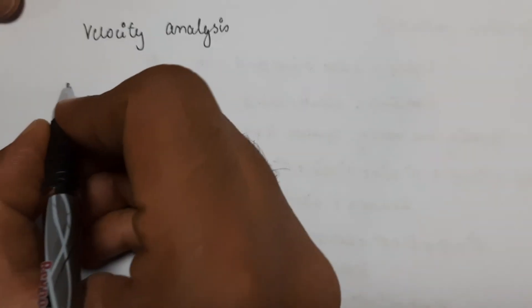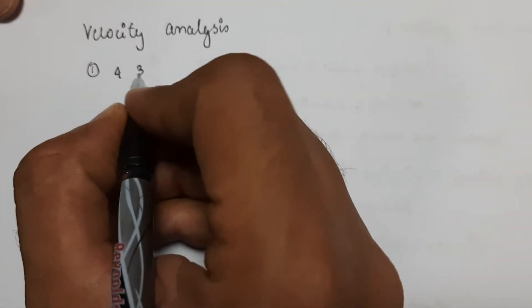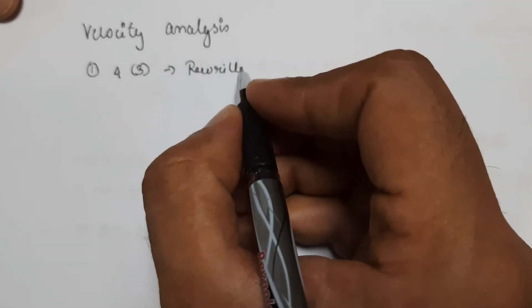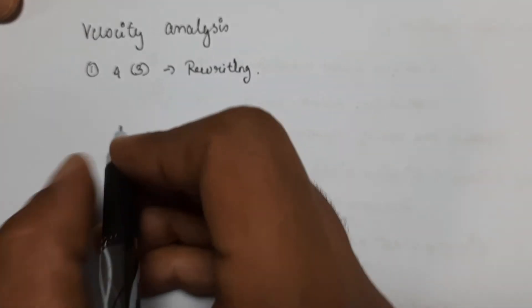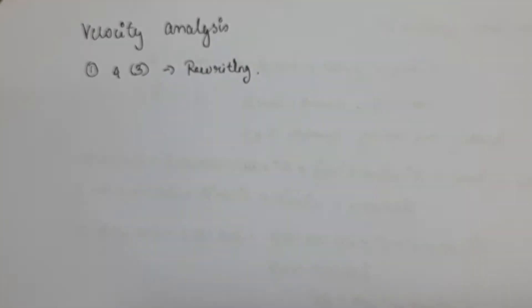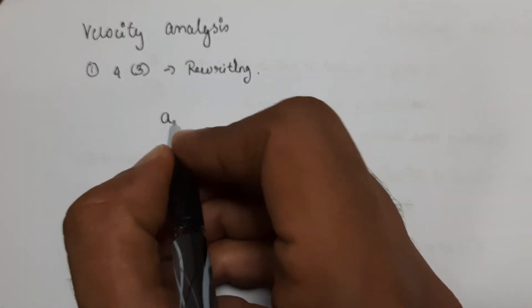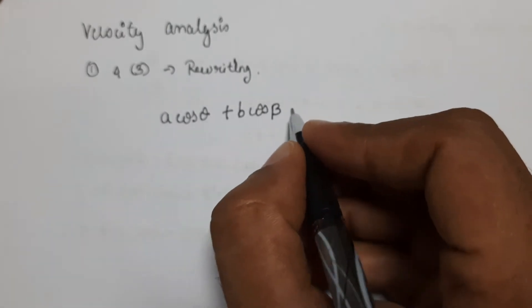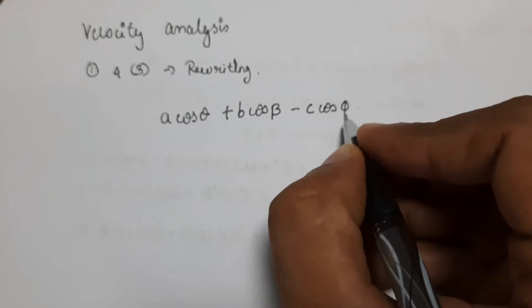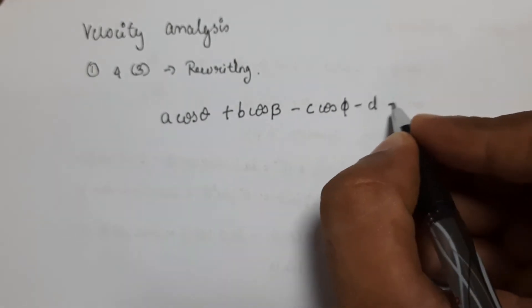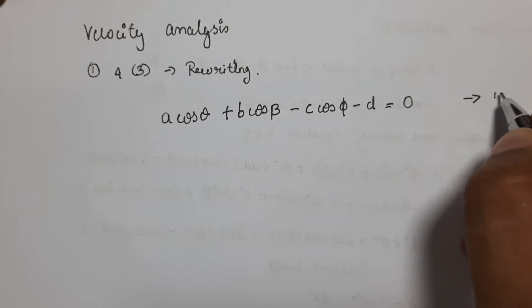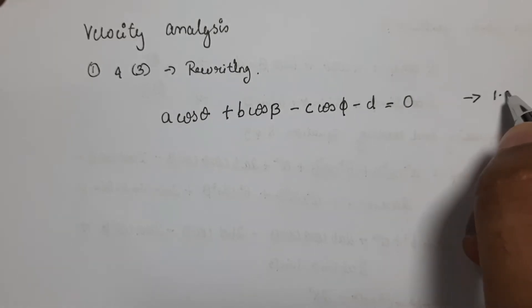Rewriting equation 1 and equation 3: a·cosθ + b·cosβ − c·cosφ − d = 0. Let us take this as equation 12.